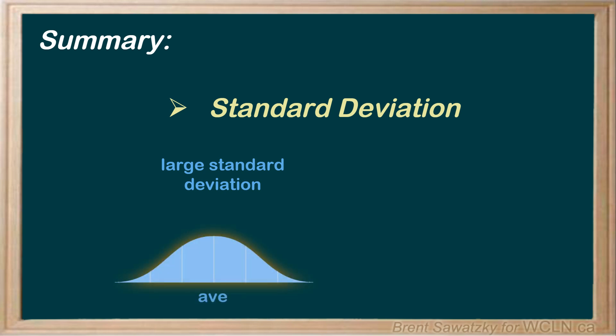In this video, we introduce the concept of standard deviation. Standard deviation tells us about how the data is spread out around its average. A large standard deviation means that the data is spread widely around the average, well, a low standard deviation means that the data is generally closer to that average, bunched together. Later, we'll learn how to calculate standard deviation given a population or sample set of data.